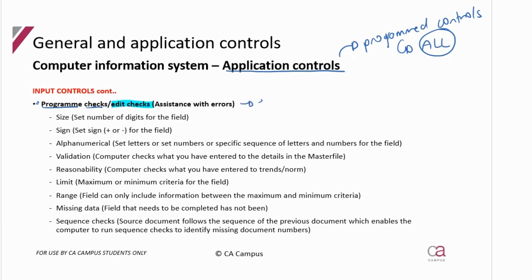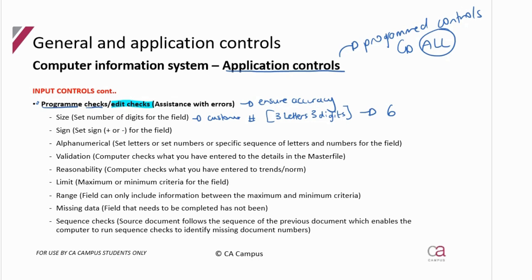These help with the prevention of errors, so they are there to ensure the accuracy of the data. The first is a size check: it makes sure that when you are putting in a specific number, you have to put in the right number of digits. For example, a customer number might be set up so that each customer number has three letters from the customer's name followed by three digits, so the field must have six items in it. If you put less or more, it's not going to allow you.